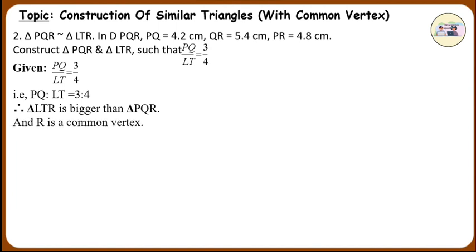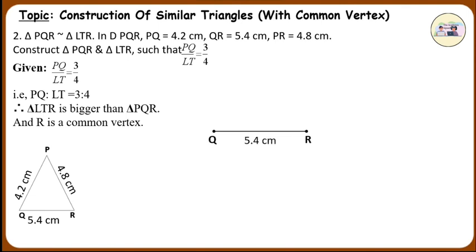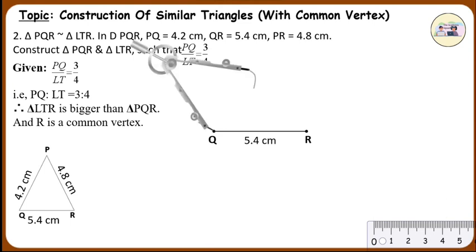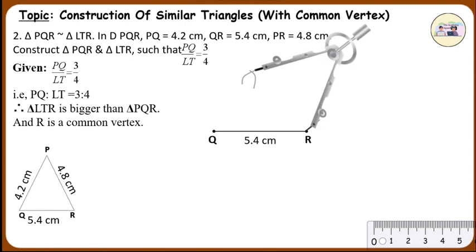Construction. Draw a rough figure of triangle PQR and mark PQ is equal to 4.2 cm, QR is equal to 5.4 cm, and PR is equal to 4.8 cm. Construct triangle PQR. Draw segment QR of measurement 5.4 cm. On the compass, take measurement 4.2 cm, keep the pointer at Q and construct an arc. Similarly, take a measurement of 4.8 cm and construct an arc from point R. Name the intersection point as P.